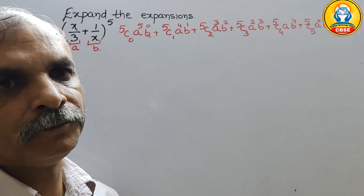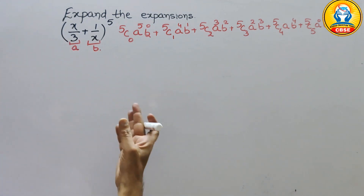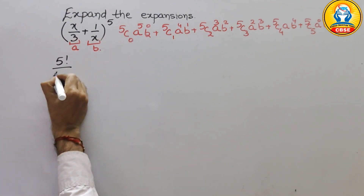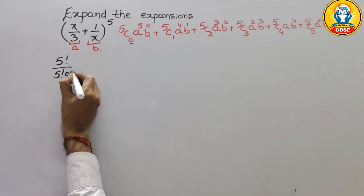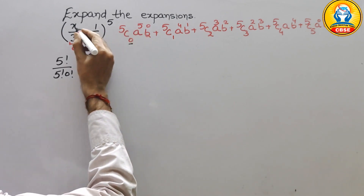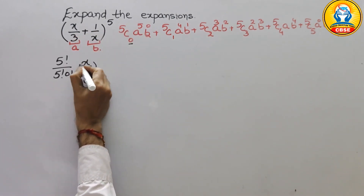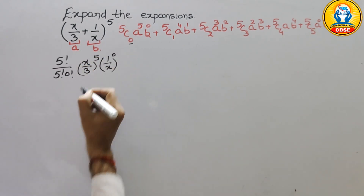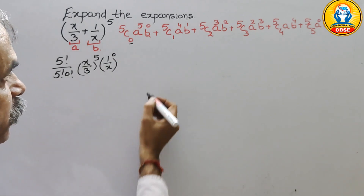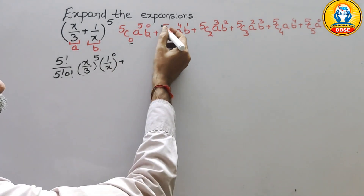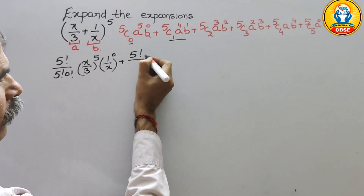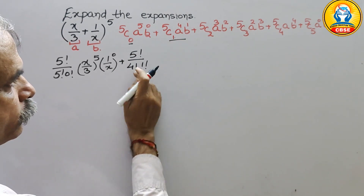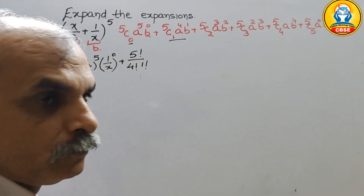Now we put in the values. 5C0 is 5 factorial divided by 5 factorial times 0 factorial, and a is x/3 to the power of 5, and b is 1/x to the power of 0. Next, 5C1 is 5 factorial divided by 4 factorial times 1 factorial.